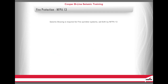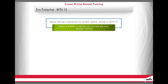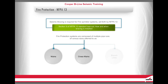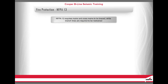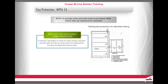Seismic bracing is required for fire sprinkler systems as set forth by NFPA 13. Section 9 of this standard lays out in detail how and when bracing is to be installed. Fire protection systems are composed of multiple pipe runs of various sizes referred to as mains, cross mains, and branch lines. Mains and cross mains supply pressurized water to the branch lines. Branch lines are smaller diameter pipes where sprinkler heads are attached. NFPA 13 requires that mains and cross mains be braced, while branch lines are required to be restrained.